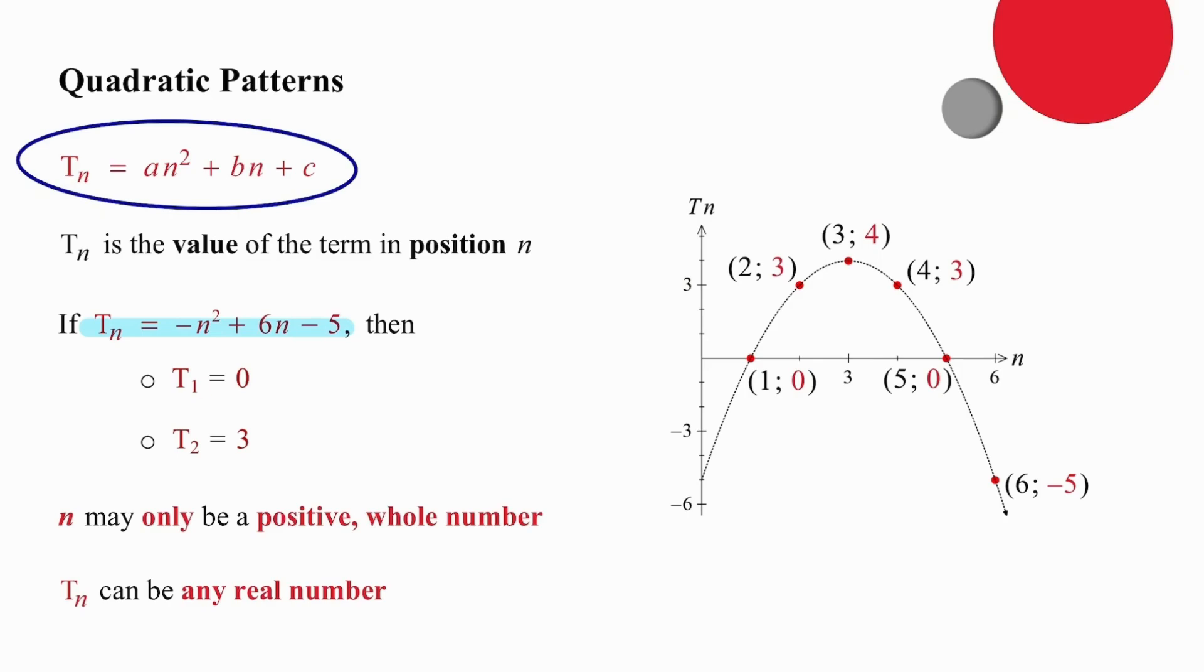If we have a closer look at that, when 1 is substituted, we get a result of 0, which we're going to plot. When 2 is substituted, we get a result of 3. If we continue the process, substituting 3 gives a result of 4, substituting 4 gives a result of 3, substituting 5 gives a result of 0, and finally substituting 6 gives a result of negative 5.